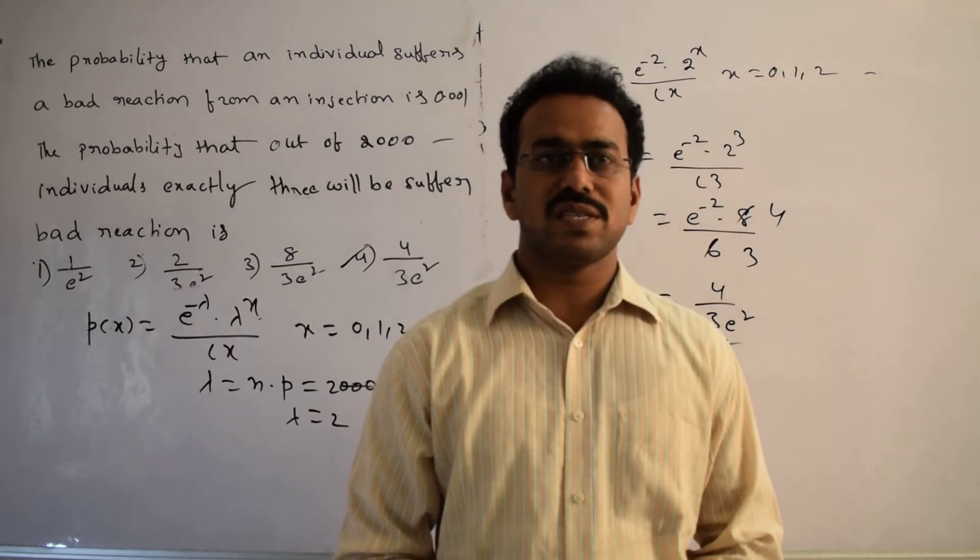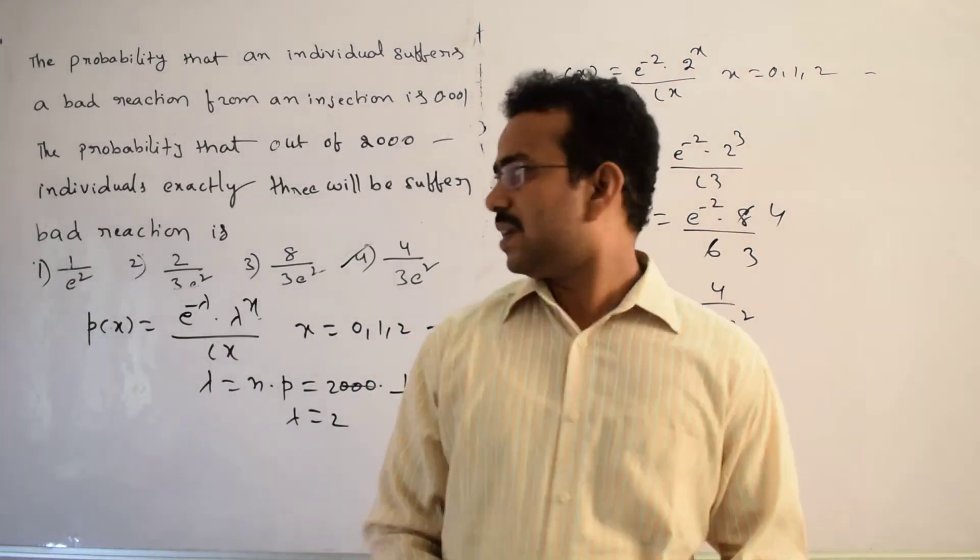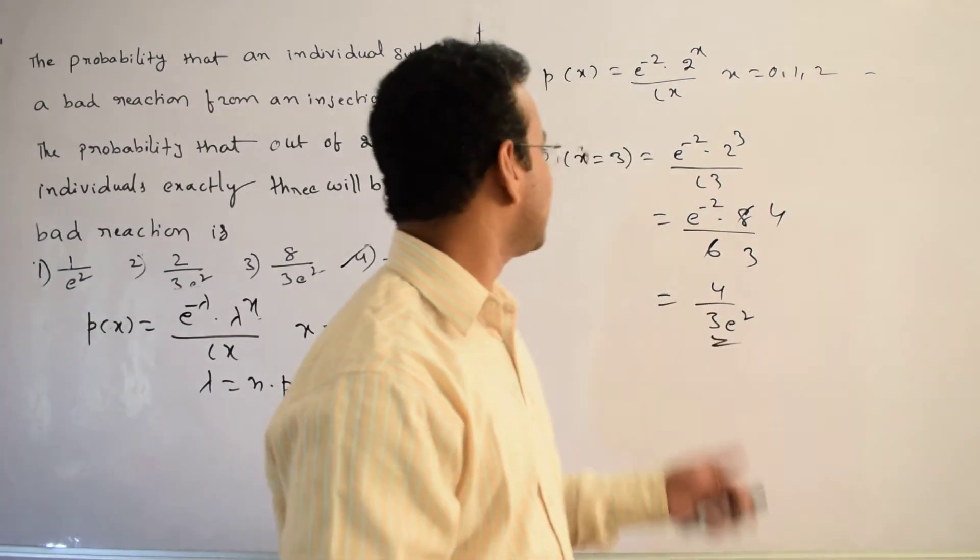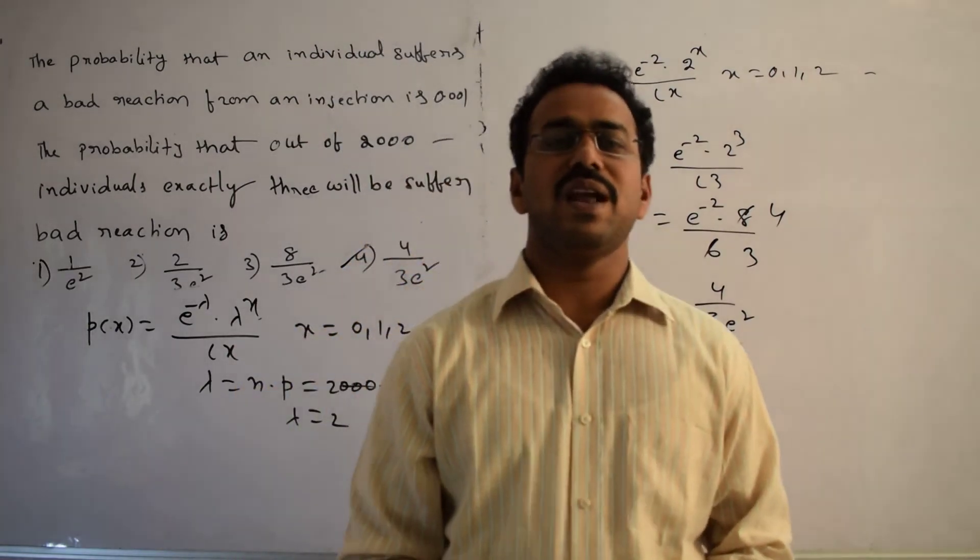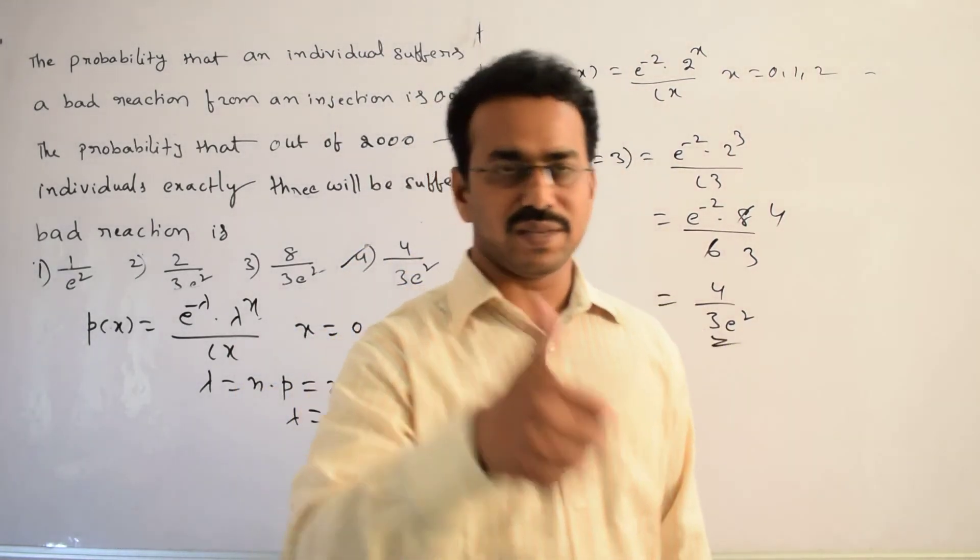So at last, what is the process we applied? Simply, we applied the concept of Poisson distribution and then we calculated p of 3, including the lambda value. Thanks for watching. All the best.